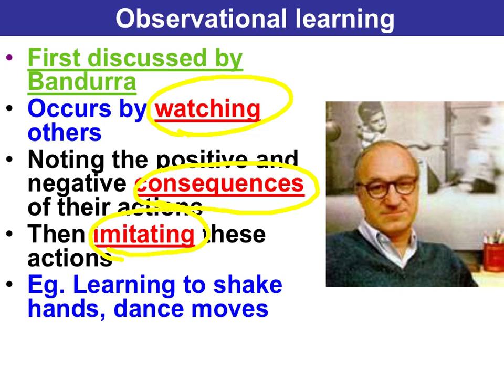Given that consequences are a key feature of observational learning, there's a degree of overlap with operant conditioning. But the difference is that operant conditioning is direct — the learner is reinforced or punished — whereas with observational learning, it's indirect; it's vicarious.